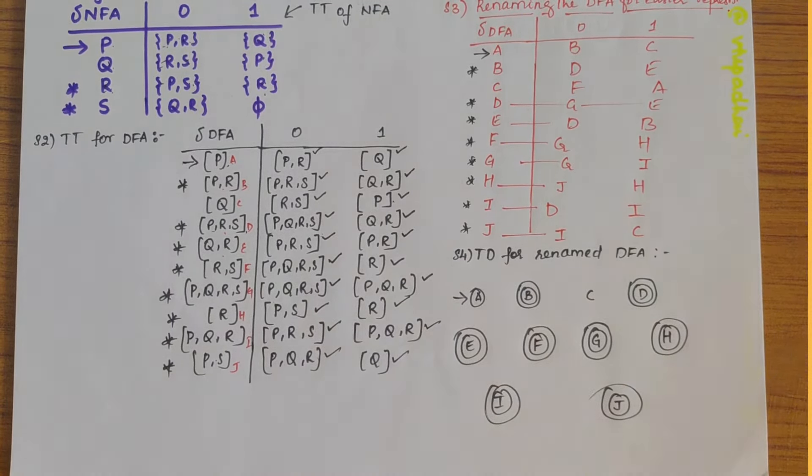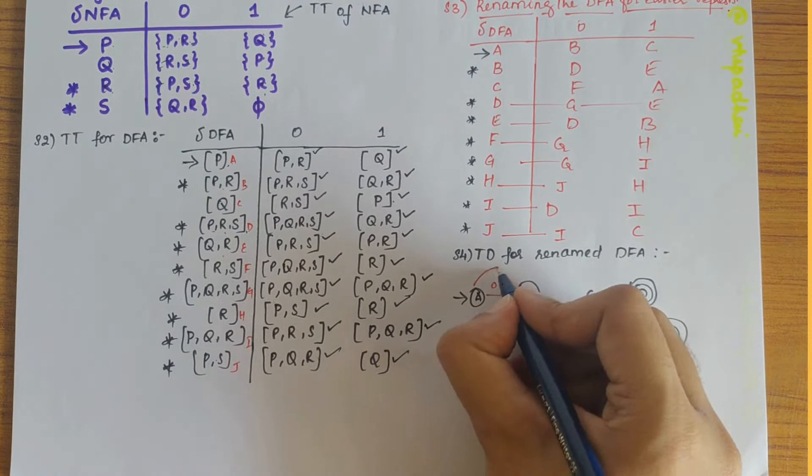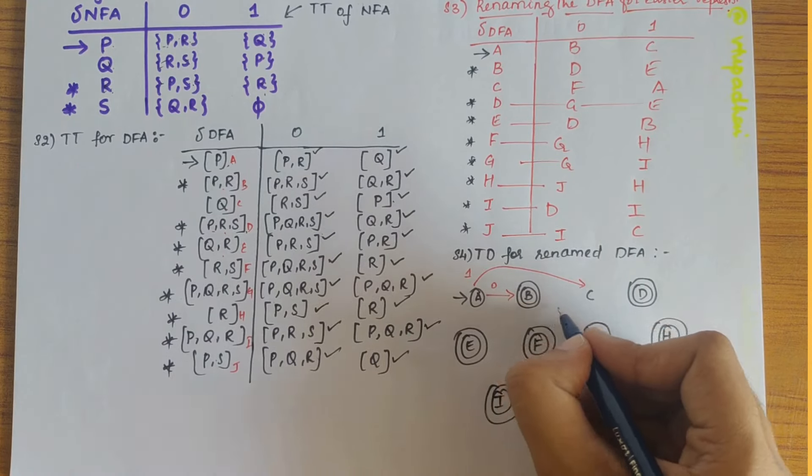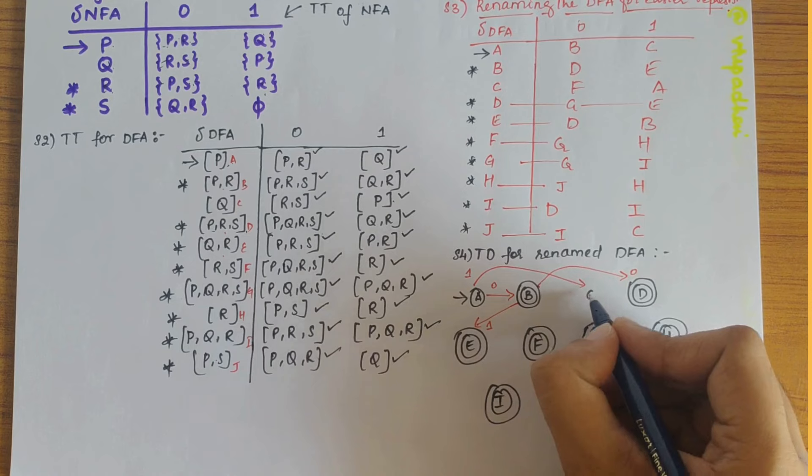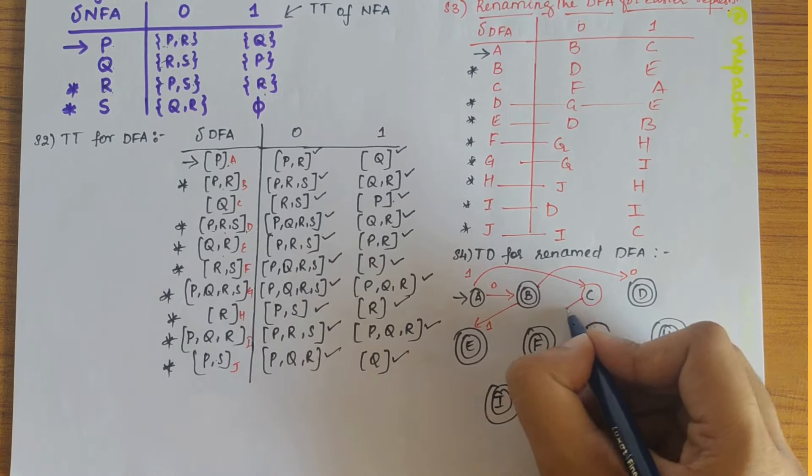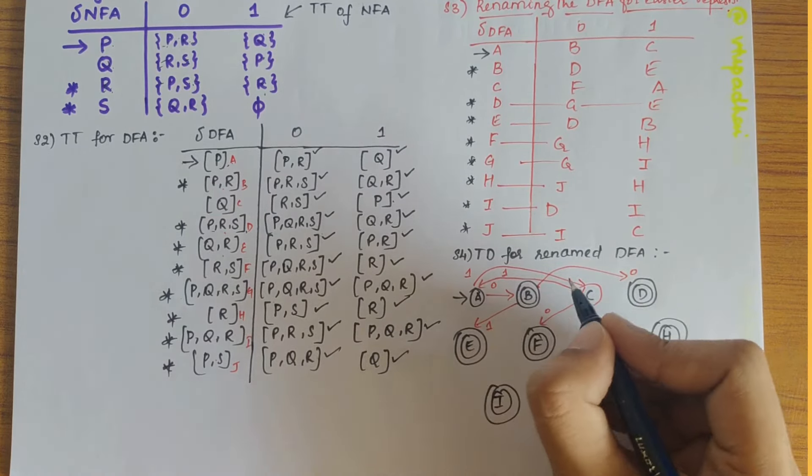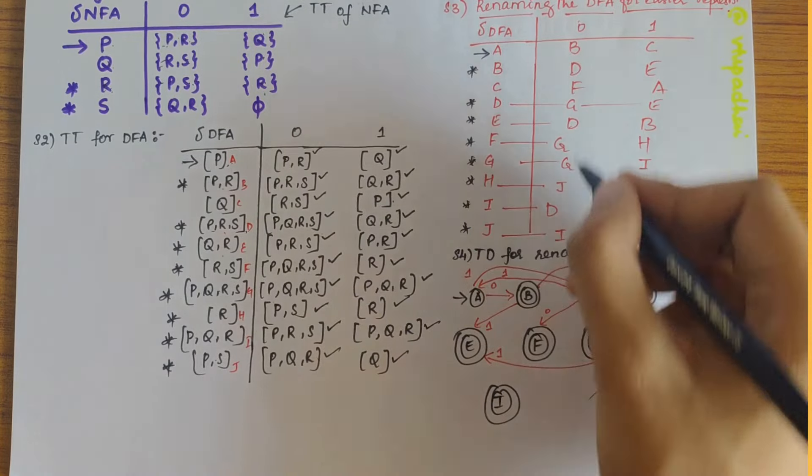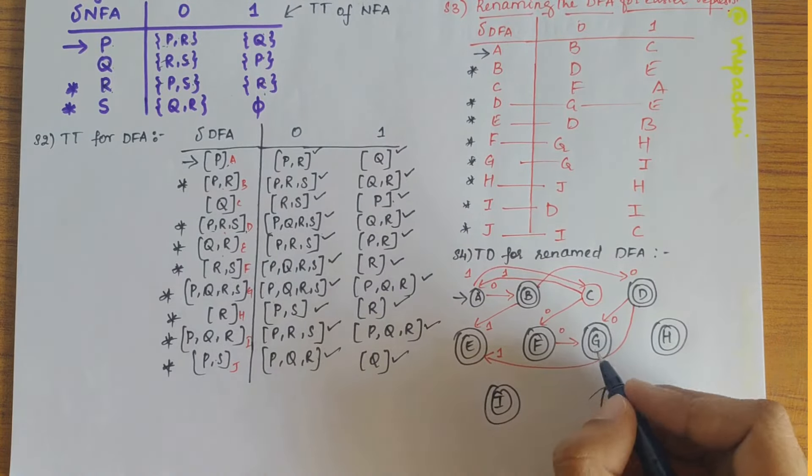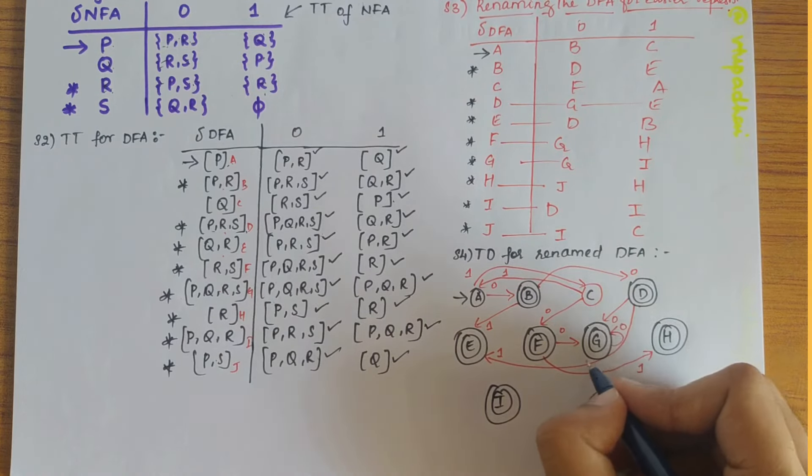So now let's draw the transition states. A on 0 gives B, A on 1 gives C, B on 0 gives D, B on 1 gives E, C on 0 gives F, C on 1 gives A. So D on 0 gives G, D on 1 gives E, F on 0 gives G, F on 1 gives H, G on 0 gives G itself, and G on 1 gives I.